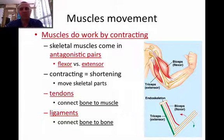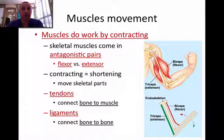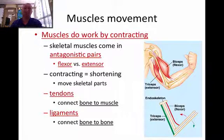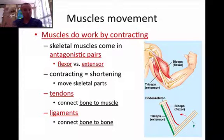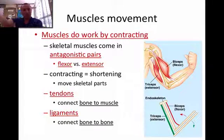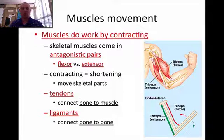Let's specifically focus in on muscle movement. Muscles do work by contracting. They're always in antagonistic pairs — there's a flexor and an extensor. Our flexor would be like our bicep; it's what pulls our arm closer to us. The extensor would be like our tricep, which makes our arm stretch out. So you've got a contracting or shortening and then an extension.